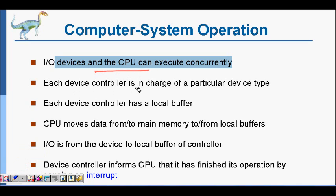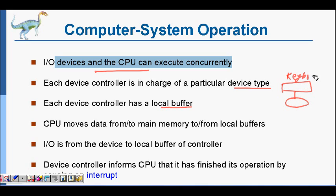Each device controller is in charge of a particular device type — for example, the monitor controller is in control of the monitor. Each device controller also has a local buffer. For example, there is a keyboard and a keyboard controller. If the computer is somehow busy, whatever keys are being pressed can be stored in this buffer, and when there is a chance, this data can be sent to the main computer.